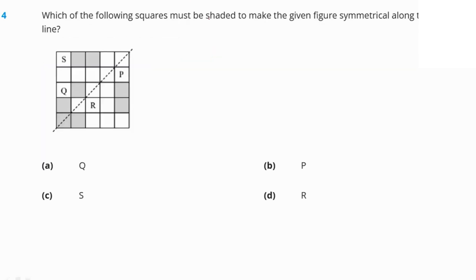Which of the following squares must be shaded to make the given figure symmetrical along the dotted line? If you notice the dotted line carefully and shade square R, this will be symmetrical along the dotted line. Option D, that is R, is the right answer.